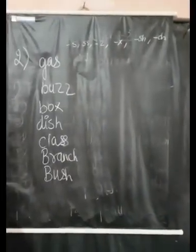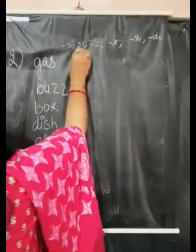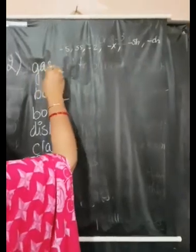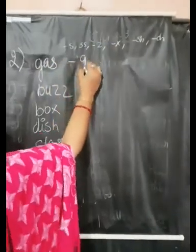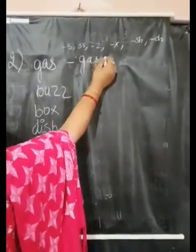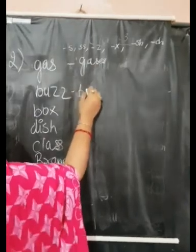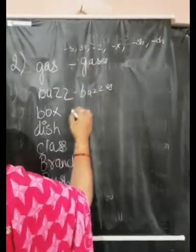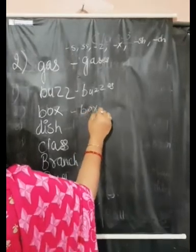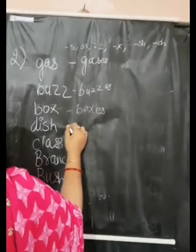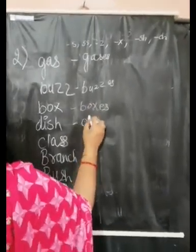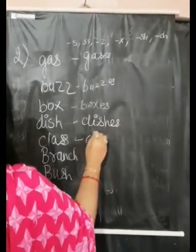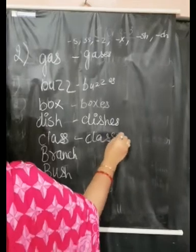Now, Rule 2: nouns ending in S, double S, Z, X, SH, and CH form their plural by adding ES. For example: gas becomes gases, bus becomes buses, box becomes boxes, clause becomes clauses.